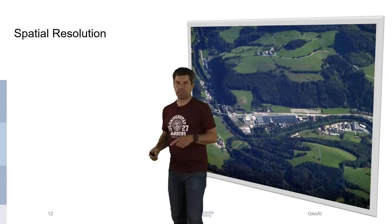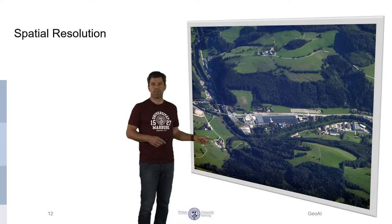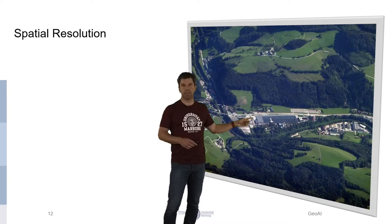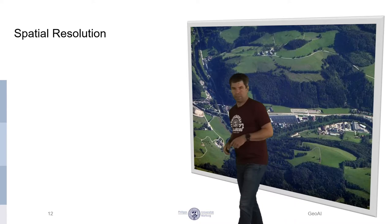The second characteristic is the spatial resolution. And when you look at this image, you see a very high resolution image. It's taken above the Alps. And what you see, for example, is this house down here. And we see some industry complex here, and we see some streets here, and we also see up here such a small forest area in the grassland region here.